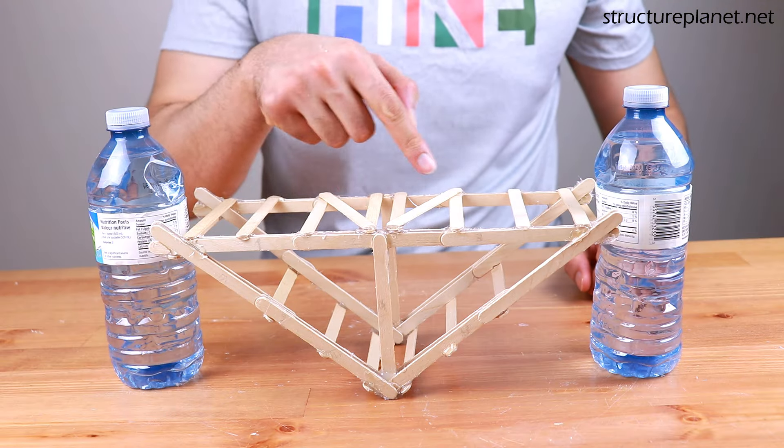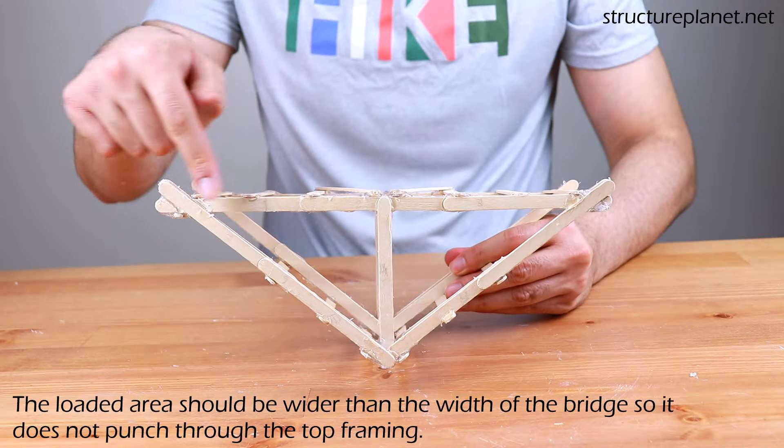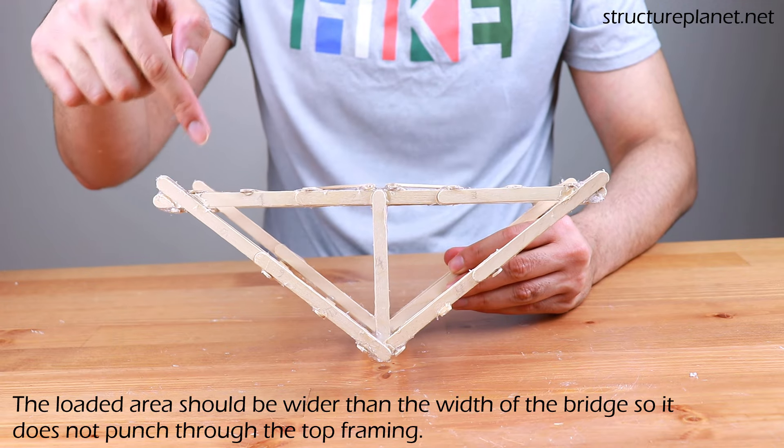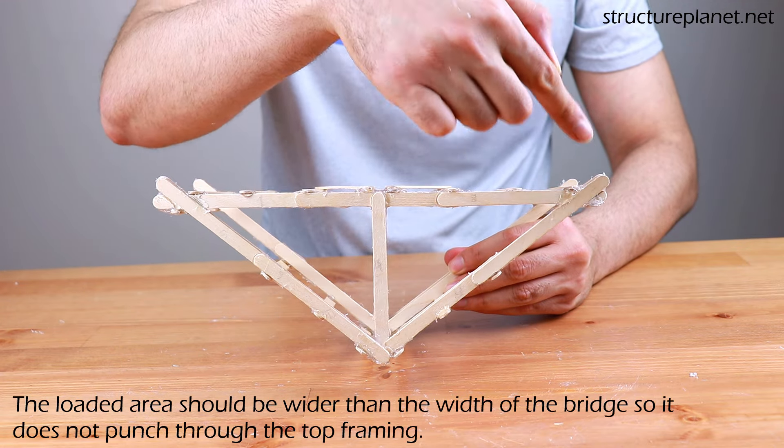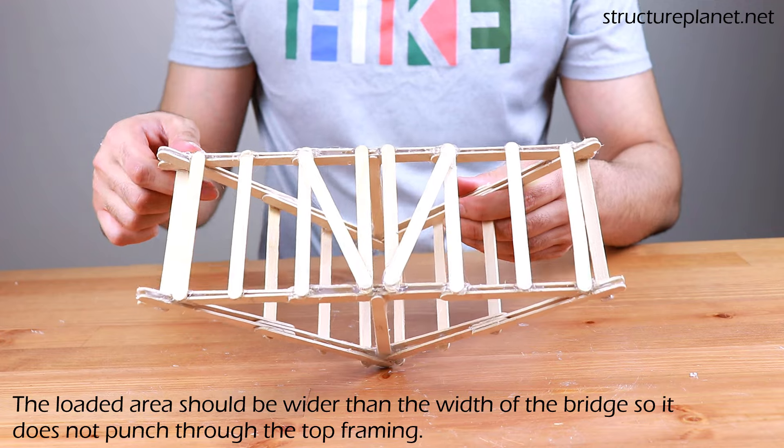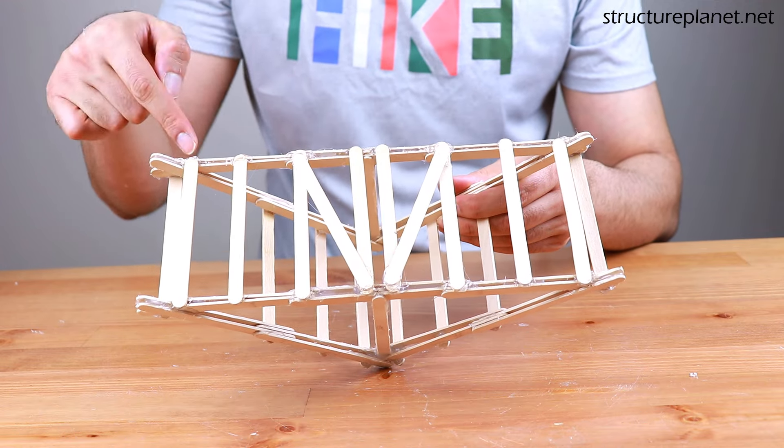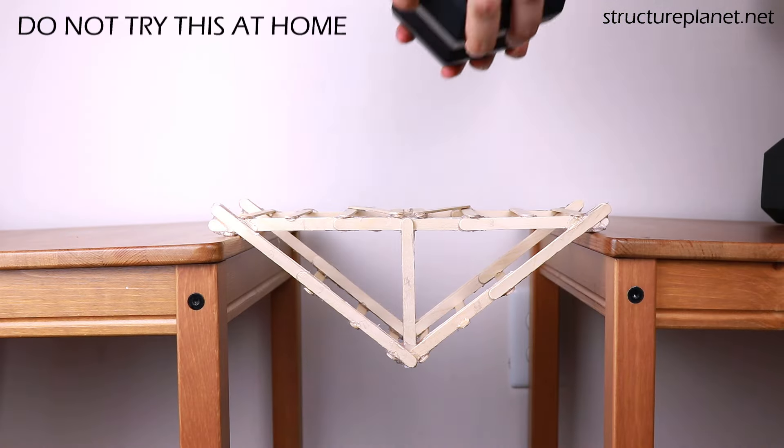This is the area that load can be applied to. The top cord and the vertical member will be in compression while the bottom cord will be in tension. The top end sticks brace the compression cords preventing them from buckling.